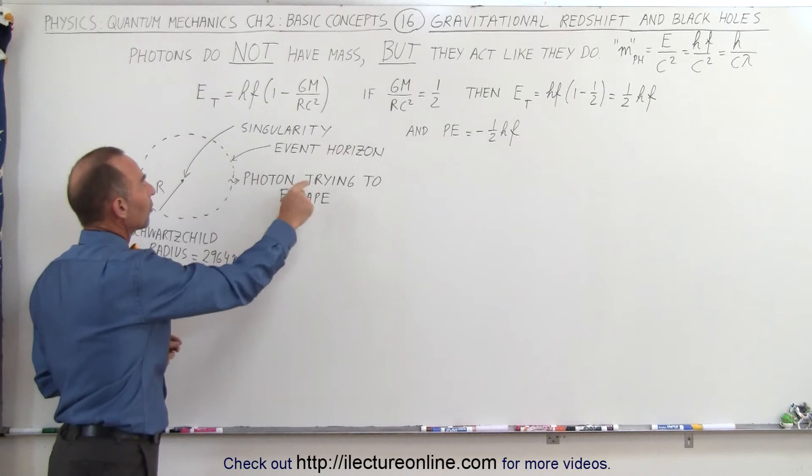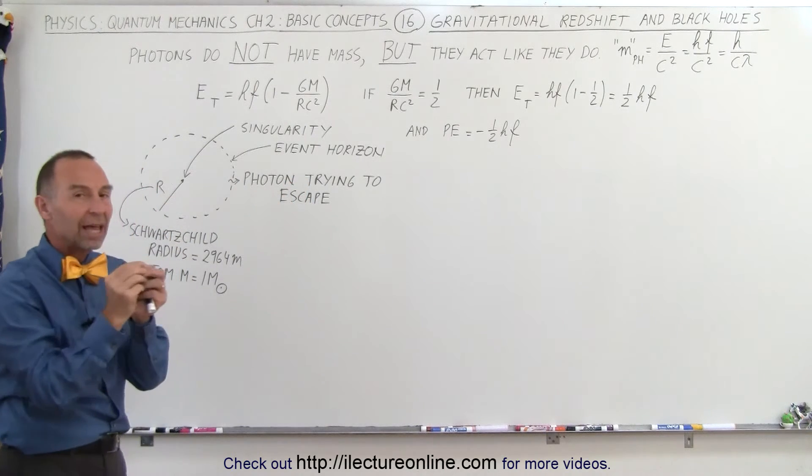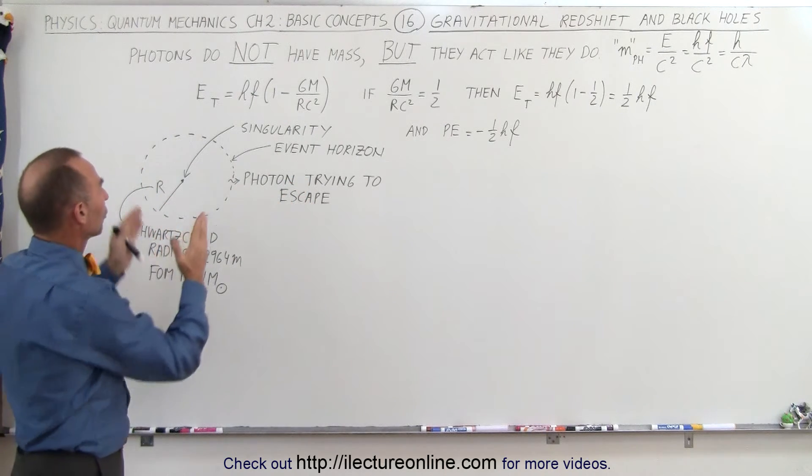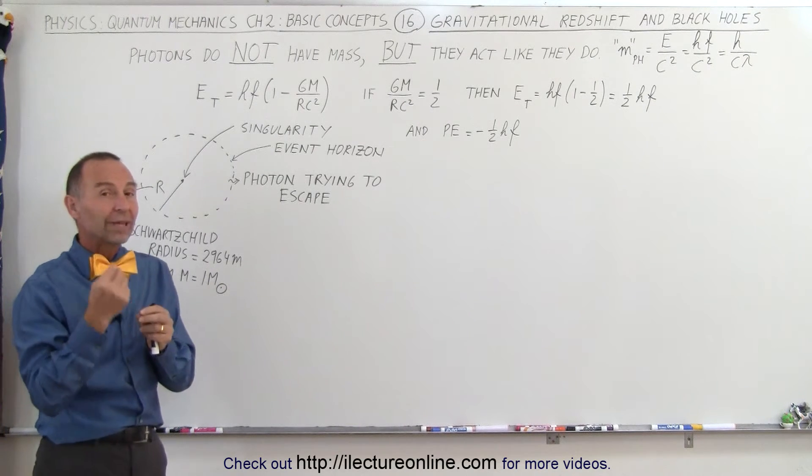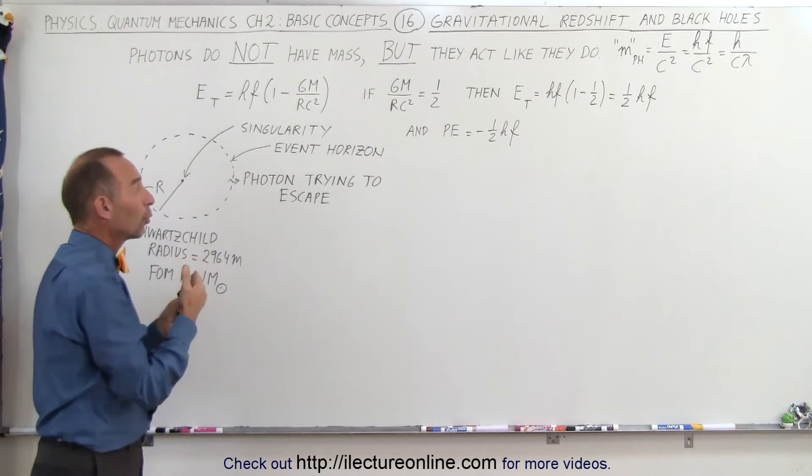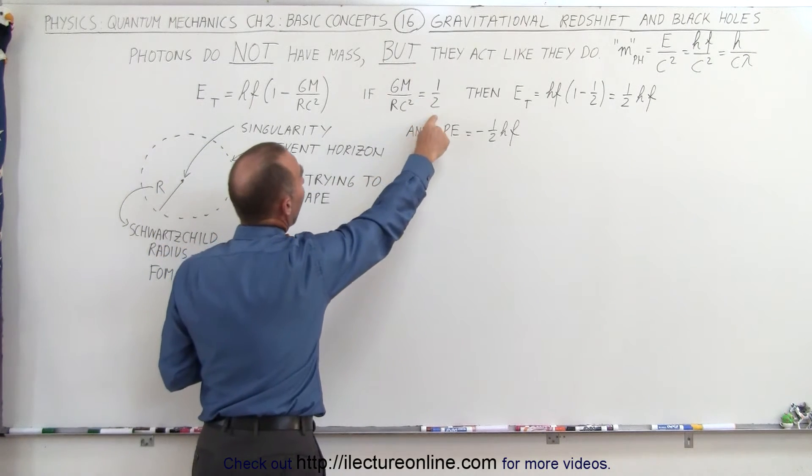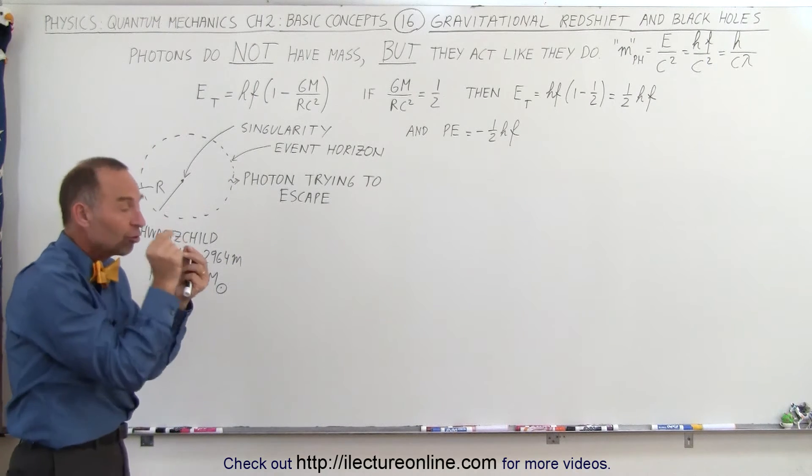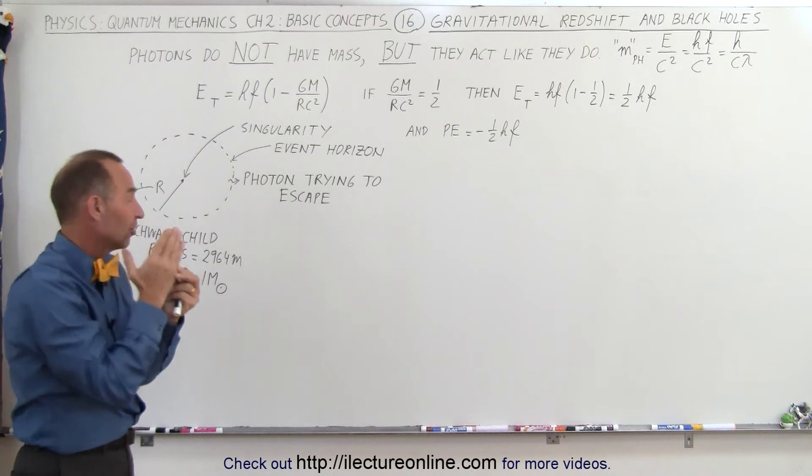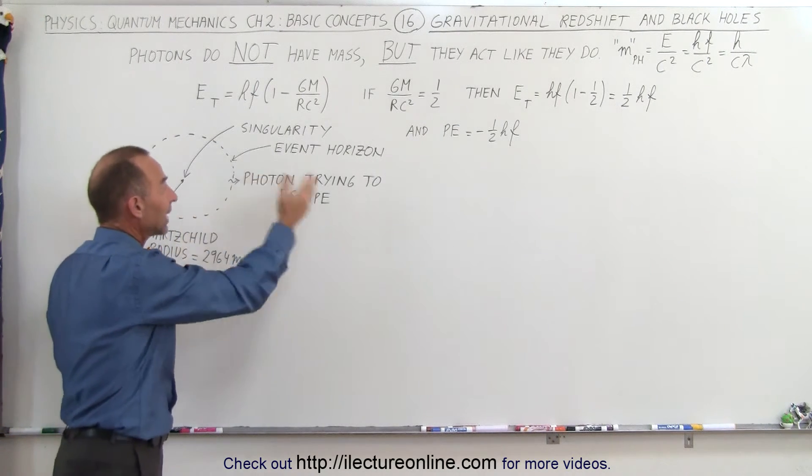Let's say we have a photon trying to escape that black hole, trying to escape from the center of the black hole, right at the event horizon. What would be the potential energy at that location? And then we realize if the potential energy is half the total energy, then the kinetic energy available will just be enough, just sufficient for the photon to get away.